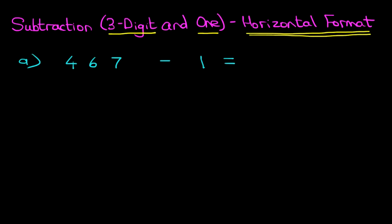Now the simple way to do this is, have a look at the number we are subtracting, which is 1. And if we look at the first number, 467, the 7 is the units.